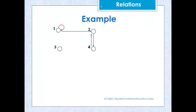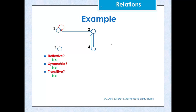Let us consider a relation defined on set A = {1, 2, 3, 4}. Is it reflexive? No, because not all nodes have a self-loop. Is it symmetric? No, because we have ordered pair (1,2) but not (2,1). Is it transitive? No, because we have an edge from 1 to 2 and from 2 to 4, but there is no edge from 1 to 4.